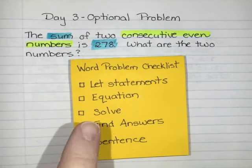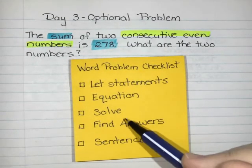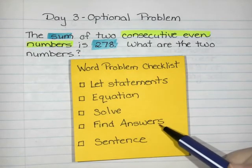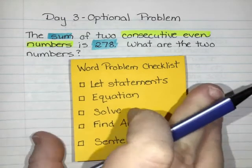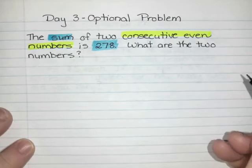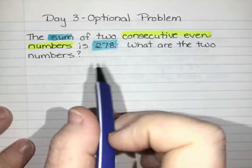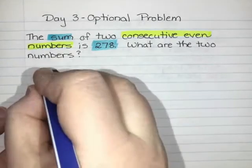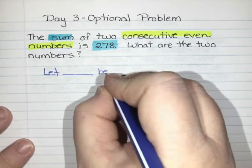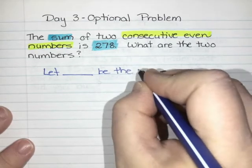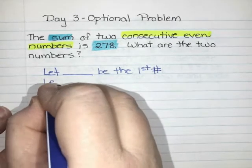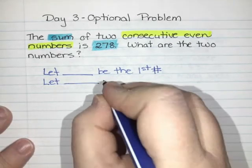When I'm doing a word problem, I want to start with some let statements, I want an equation, I need to solve that equation, then I have to take that answer and find the answers to the actual problem, and then write a sentence at the end. So I'm going to start with let statements for my unknowns. The final sentence says what are the two numbers, so I am missing two numbers. I'm going to let something be the first number and let something be the second number.